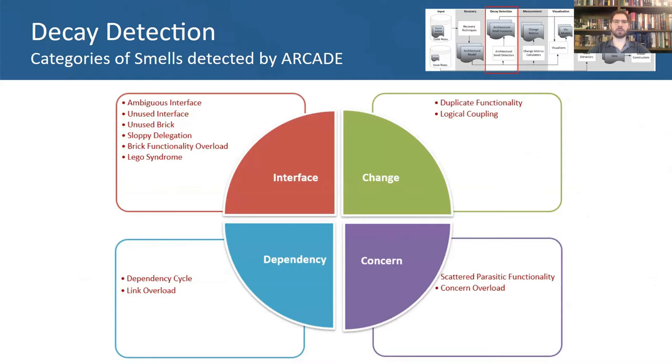Each category requires different characteristics to be present in the models and therefore might require that the user apply specific recovery techniques to be able to detect that category. For example, one cannot detect concern-based smells using the model generated by ACDC, as that model does not include information about concerns.